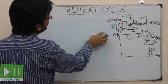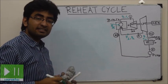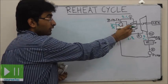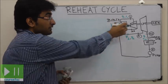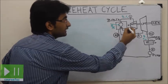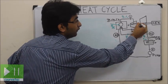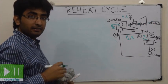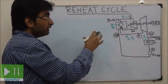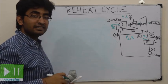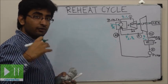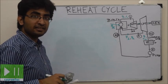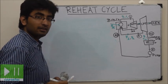In the reheat cycle we have only two reheats, because all the turbines are mounted on the same shaft. The high pressure turbine and the low pressure turbine are both mounted on this shaft, and mounting more than two reheats increases the stress on the shaft. This is the disadvantage of the reheat cycle. Thank you.